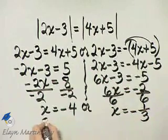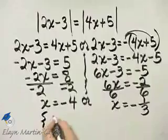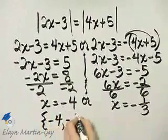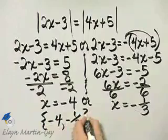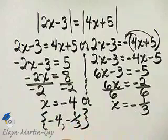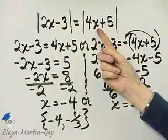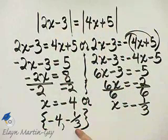So what is our solution set? It is the set containing negative 4 and also negative 1 third. And I'll let you check. Go to the original equation. Let x be negative 4 here and here, and a true statement will result. Do the same thing with negative 1 third, and then you know you're correct. These are both solutions.